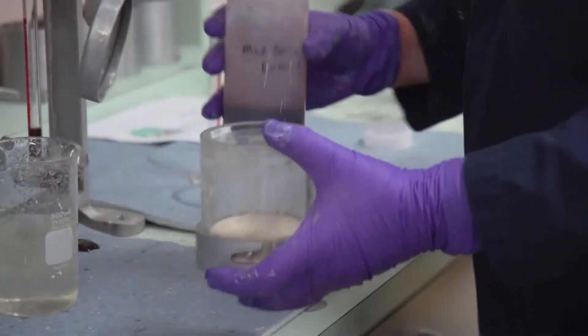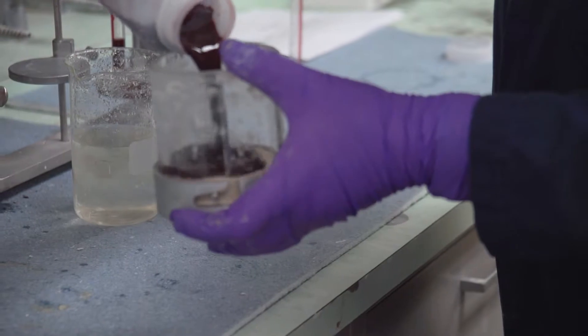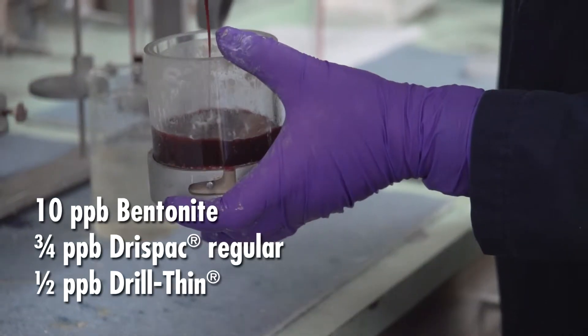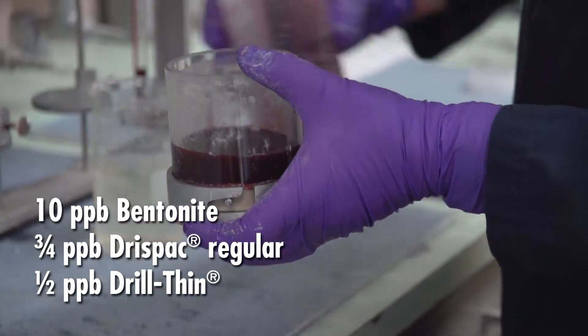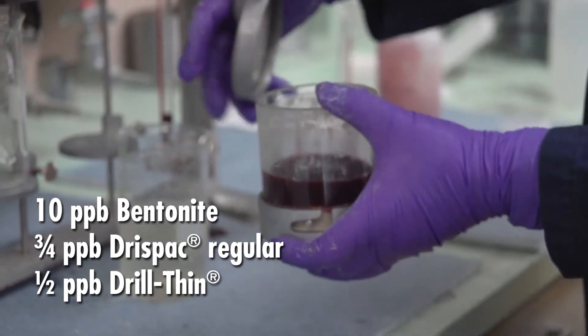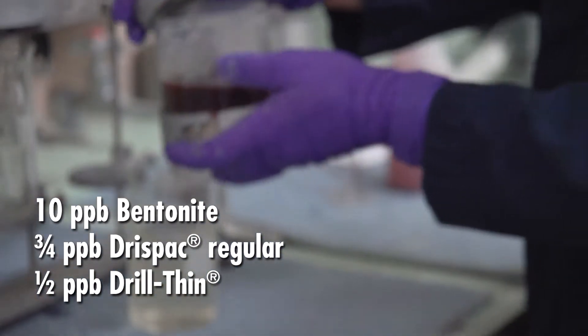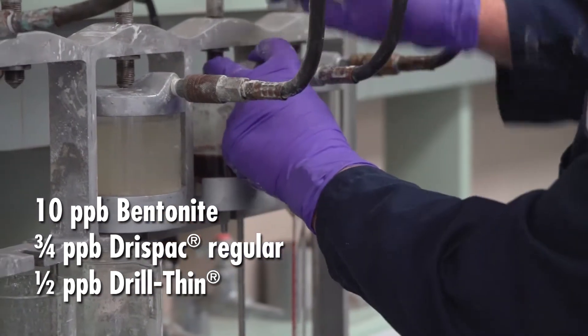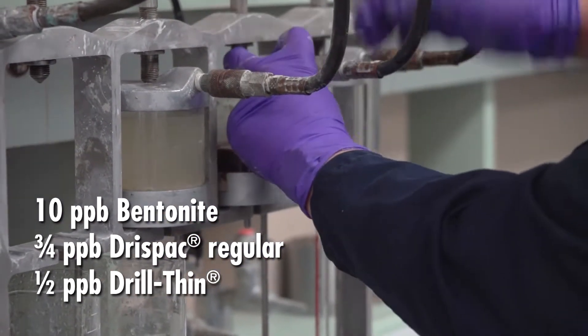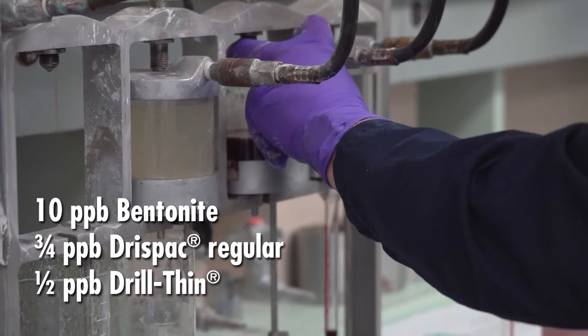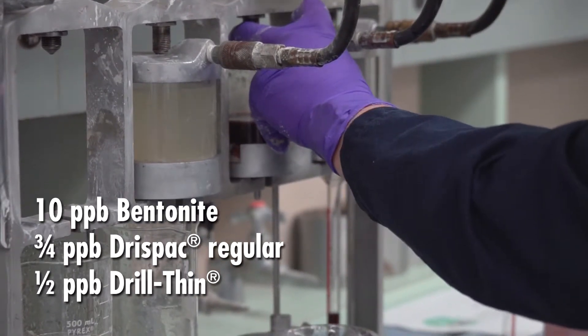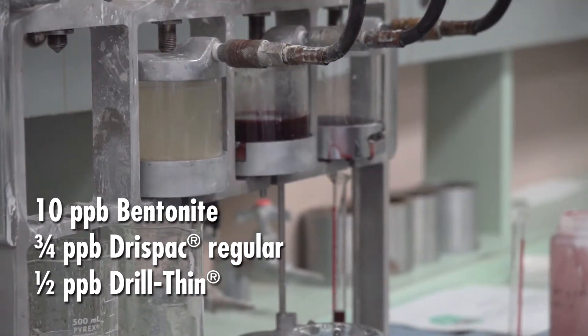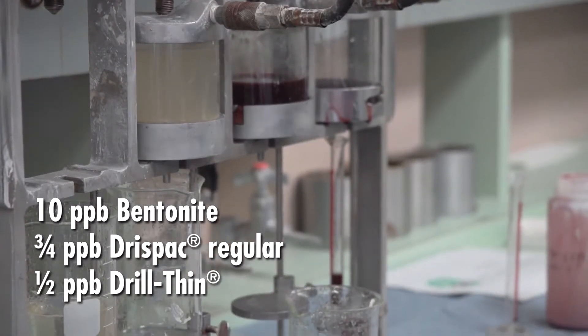And on the last one, I'm going to put some drilling fluid. This is a simple 10 pound per barrel bentonite with three quarters of a pound of Drispac regular and a little bit of half a pound of drill-thin in there to give it some color, so we can kind of see what's going on.